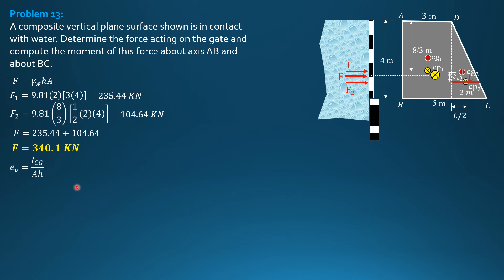So I sub CG of triangle is B times H of triangle cubed over 36, divided by area, which is 1/2 BH times bar H. Simplifying this, cancel BH, so it is H squared over quantity 18 bar H.